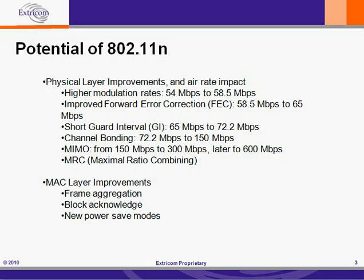There are a number of other physical layer improvements that 802.11n brings to the table. FEC — improved forward error correction — brings us from 58.5 Mbps to 65 Mbps. Short guard interval moves 65 Mbps up to 72.2 Mbps. Channel bonding raises the potential error rate from 72.2 Mbps to 150 Mbps. And MIMO also has a very significant impact, raising the error rate from 150 Mbps to 300 Mbps.